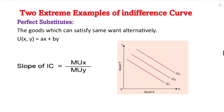Now let's look at two extreme examples of indifference curves. The first case is perfect substitutes. When two goods are perfect substitutes, for example tea and coffee, they are totally perfect substitutes.